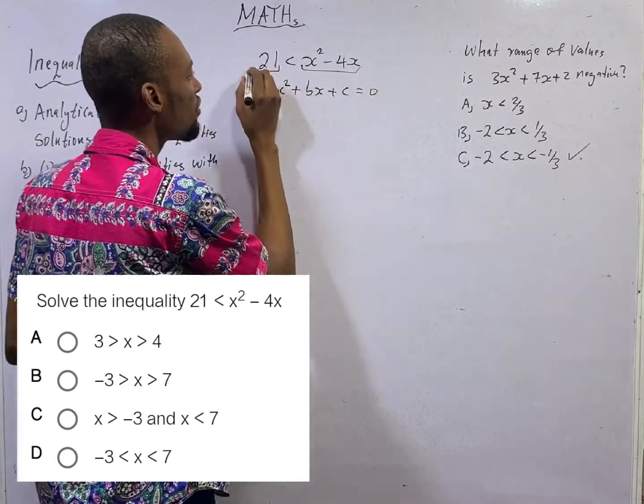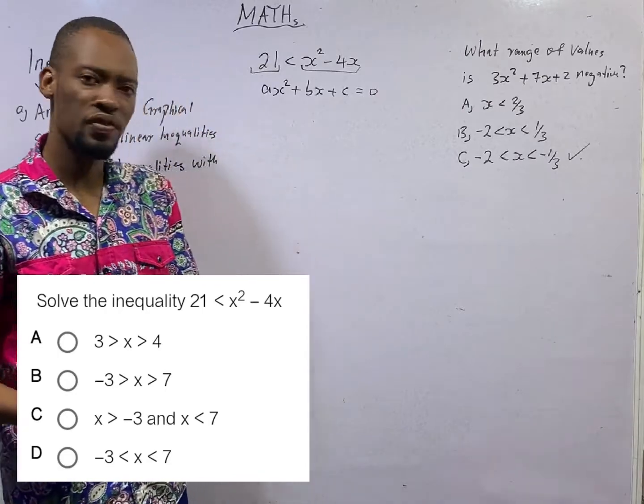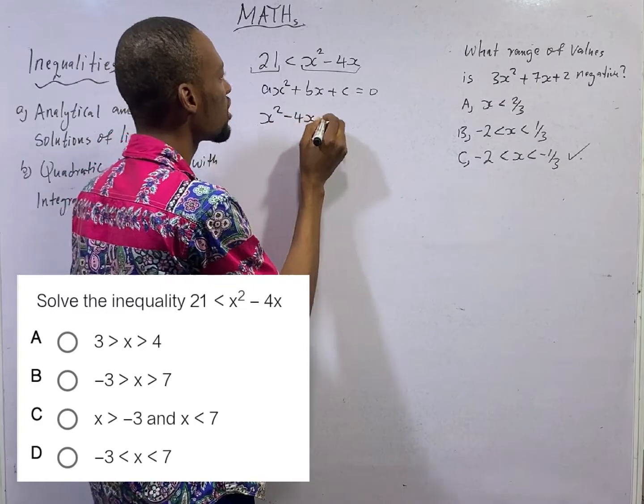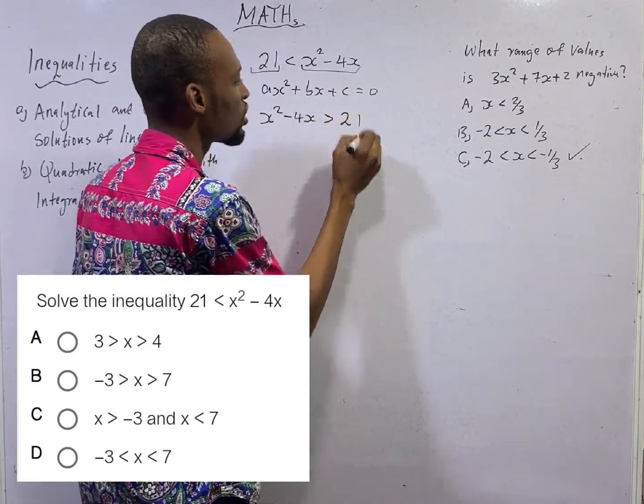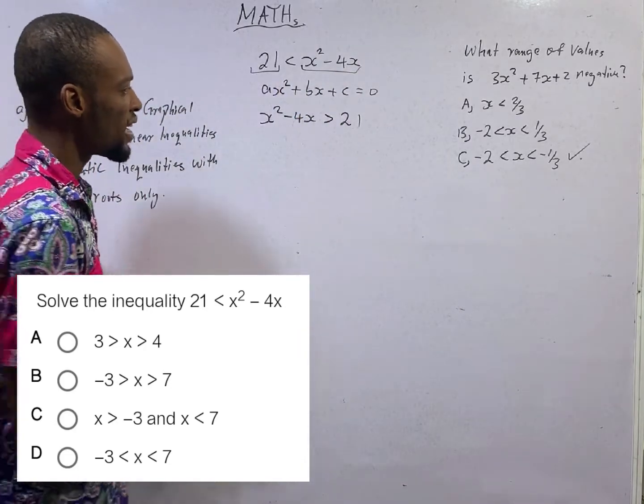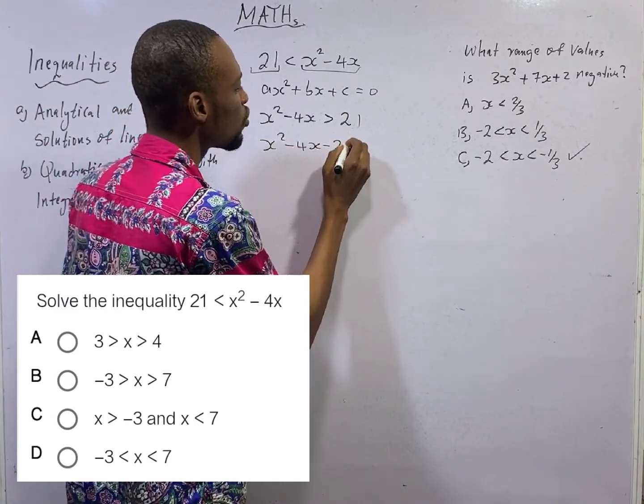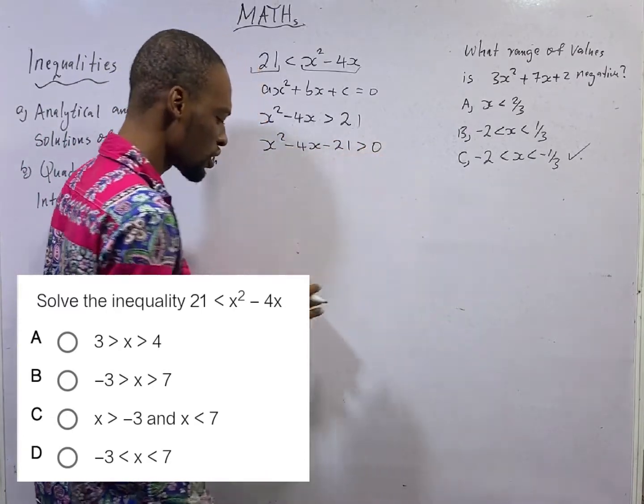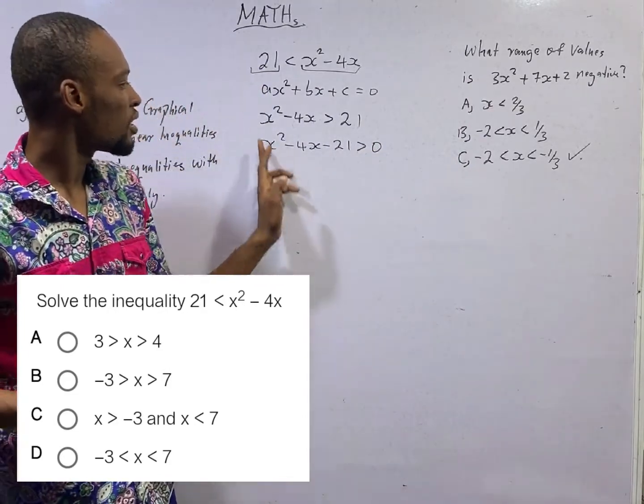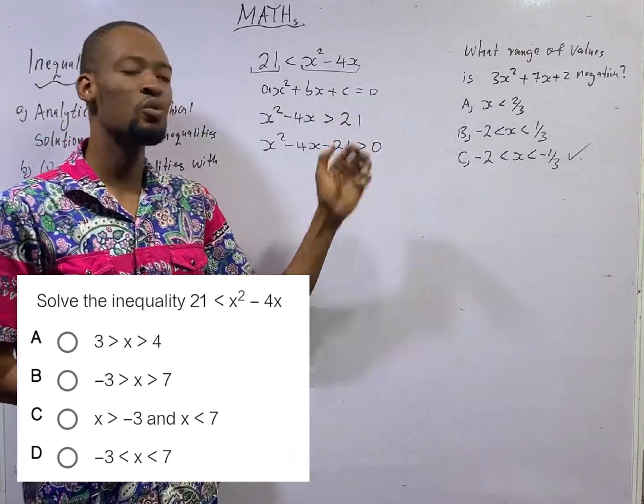If 21 is less than s² - 4s, it implies that s² - 4s is greater than 21 since 21 is lesser than it. From here, we can say that s² - 4s - 21 is greater than or equals 0. We have arranged it in standard form. 1s squared, as squared, 4s, bs, 21c, which is constant.